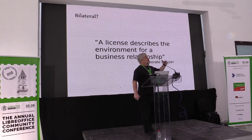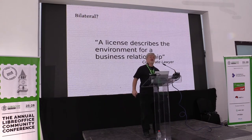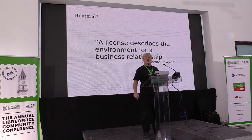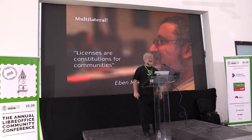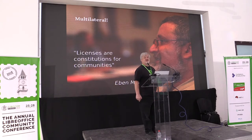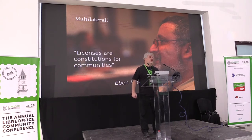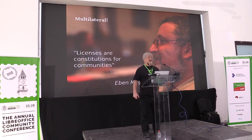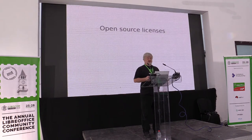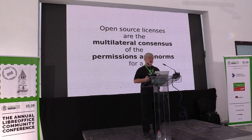So, let's talk about bilateral licenses. A corporate lawyer will tell you the license describes the environment for a business relationship — it is the terms between the two companies that says where they pay to go. An open source license isn't that. An open source license is the constitution for a community. It describes what rights are available for everybody and what the terms are by which you can apply those rights. The rights available to you are the four freedoms: the freedom to use software for any purpose, the freedom to study the source code, the freedom to improve it to better meet other people's needs, and the freedom to distribute either the original version or your modified version.